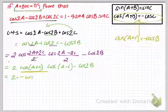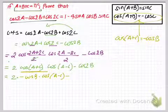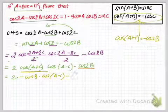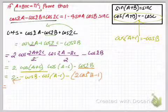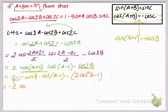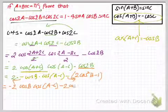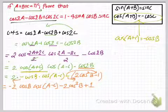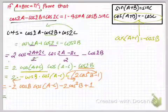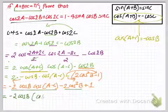So here I can write minus cos B times cos(A minus C), written as it is, minus and then for cos(2B) I'm going to apply the formula 2 cos squared B minus 1. Multiplying out, I get minus 2 cos B times cos(A minus C) minus, and distributing the negative sign: 2 cos squared B, then minus and minus 1 is equal to plus 1.